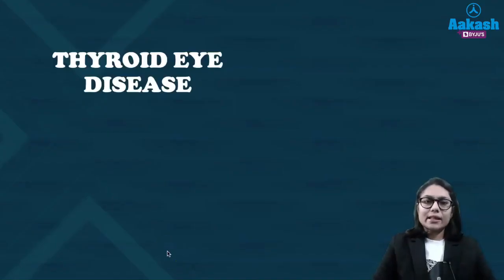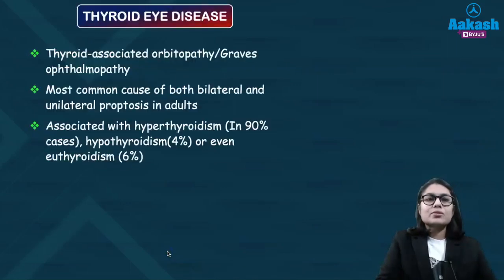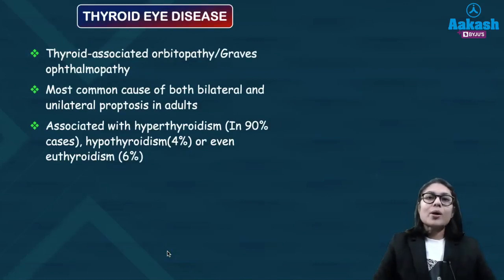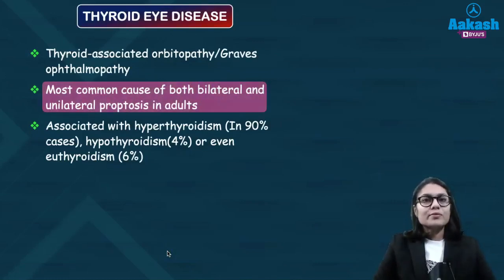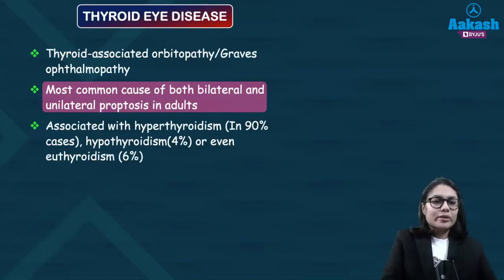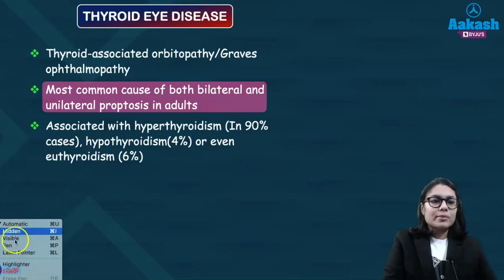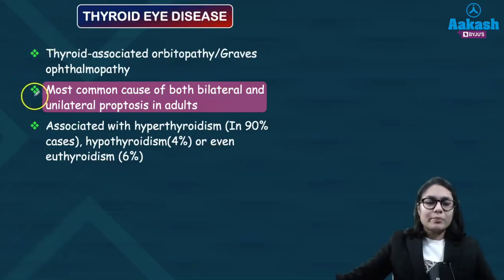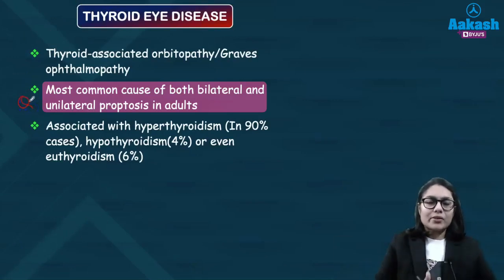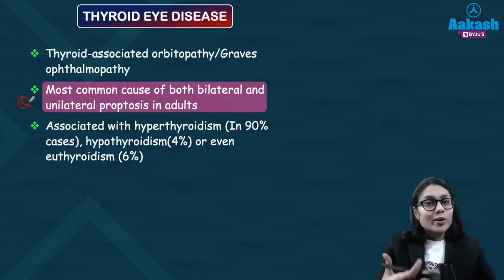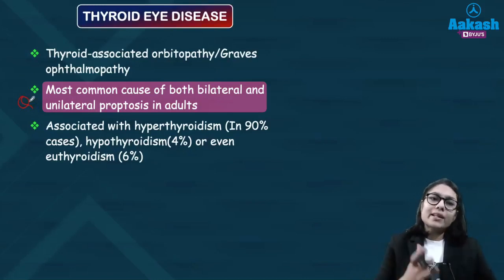Now coming on to the next disease entity which is thyroid eye disease. Thyroid eye disease is also known as thyroid associated orbitopathy or Graves' ophthalmopathy. As we've already seen, thyroid is the most common reason for both unilateral and bilateral proptosis seen in adults. This is an extremely important point — it is the most common cause of both unilateral and bilateral proptosis in adults.